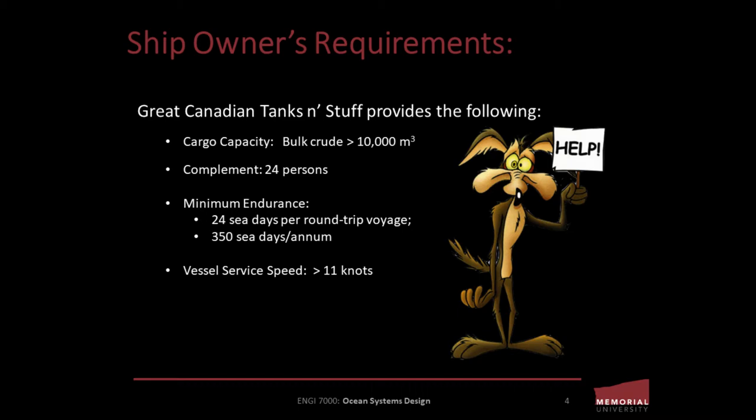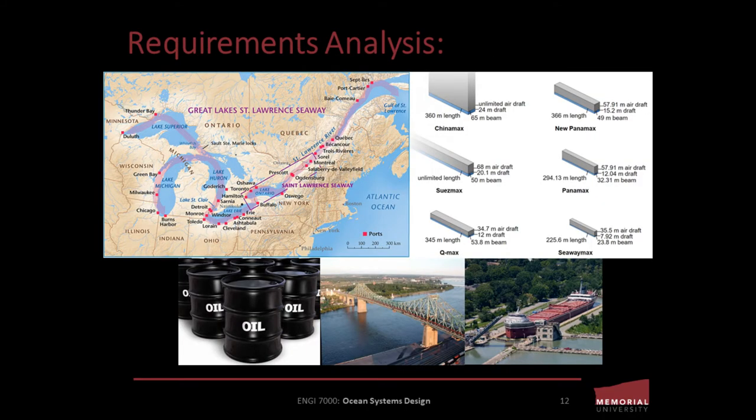More importantly, consider the area of operation they've identified. Specifically, this class of ships is meant to operate in the Great Lakes and the St. Lawrence Seaway. What does this mean in terms of the ship's needs for hydrodynamic performance, sea keeping, or something as basic as principal particulars? If you know anything about the Seaway, you might know that there are length, beam, draft, and air draft restrictions on ships transiting this region.